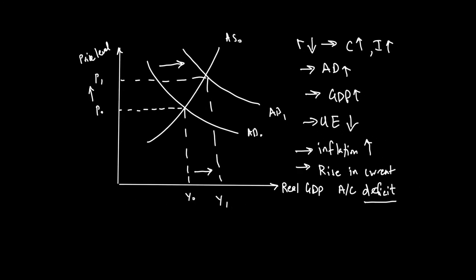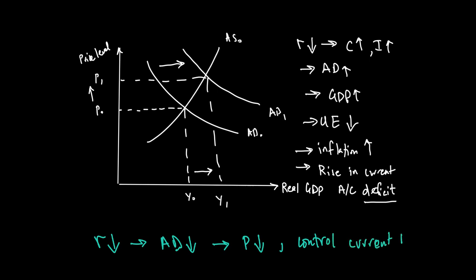So expansionary monetary policy can increase GDP and reduce unemployment. On the other hand, if you increase interest rates, contractionary monetary policy occurs: AD falls as consumption and investment fall. This can be useful to bring the price level down or to help manage the current account. However, because AD is going down, unemployment will rise and GDP will also fall. Not all macroeconomic goals will be achieved when using contractionary monetary policy.